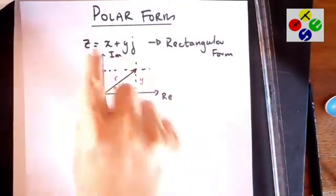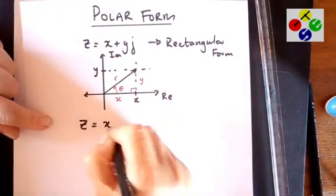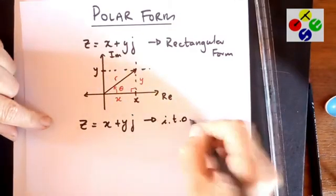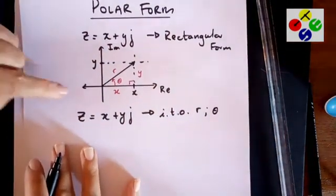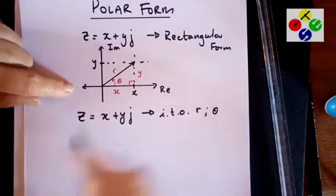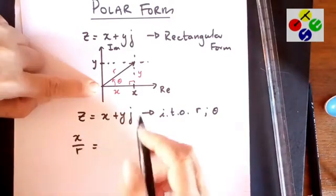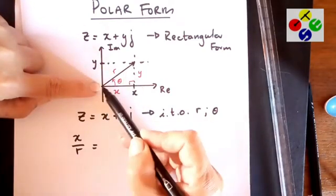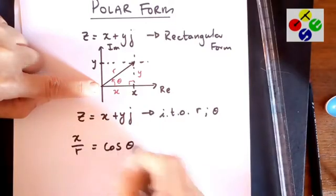But what I want to do first is I want to convert that Z equals x plus yj to be in terms of R and theta. So I'm going to use trig ratios to do that. So if I have x over R is going to be, if I'm standing here, you've got adjacent over your hypotenuse, which is going to be cos of theta.